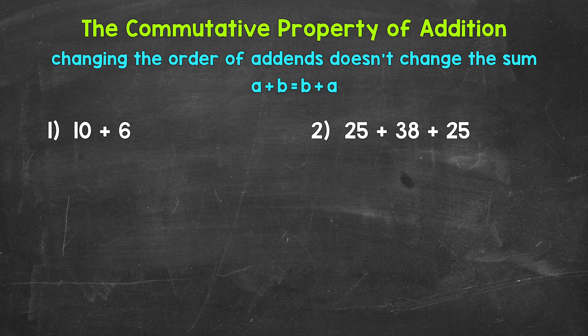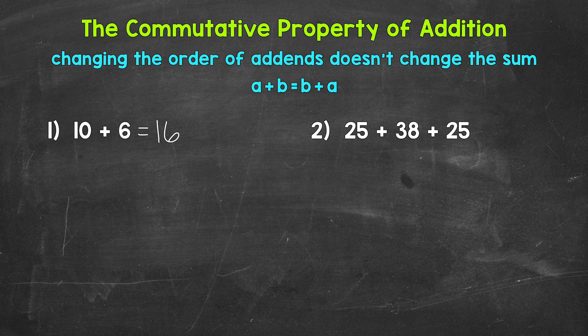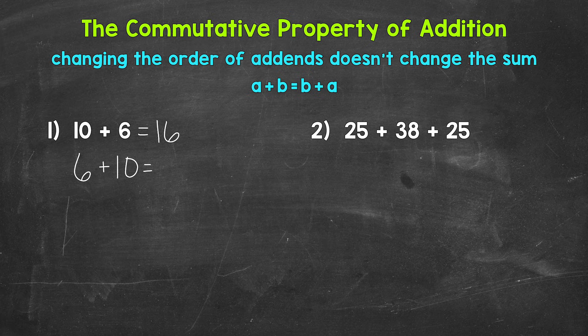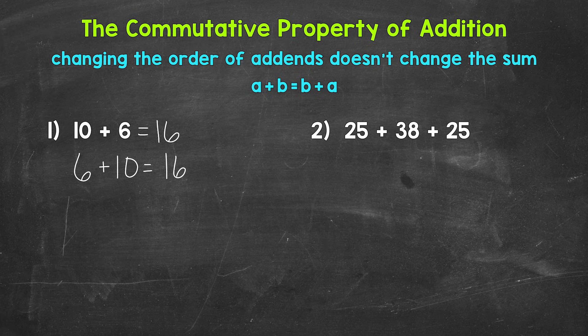Starting with number 1, we have 10 plus 6. Now 10 plus 6 equals 16. The commutative property of addition states that we can change the order of the addends and that will not change the sum. So 6 plus 10 equals 16 as well. That's the commutative property of addition.